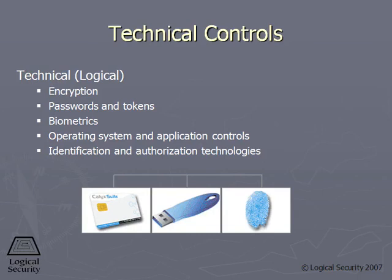There are technical controls for access control. The big one is encryption — we have a whole domain on cryptography that we're going to talk about. Encryption is commonly used to control sensitive data. Passwords, biometrics, operating systems, and databases all have their own type of technical controls to make sure that whoever is trying to access some type of data, they're the ones who are supposed to be.